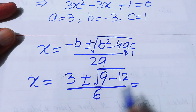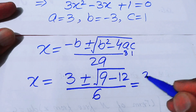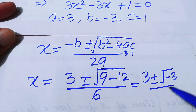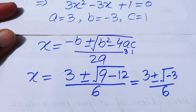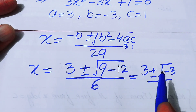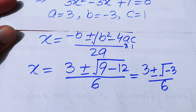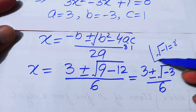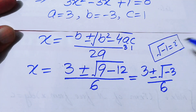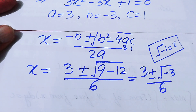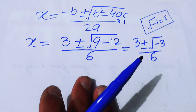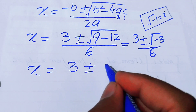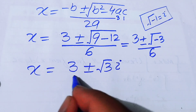Simplifying: 9 minus 12 equals minus 3 under the square root. Since √(−1) = i, this gives the two complex roots: x equals (3 ± √3·i) over 6.